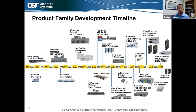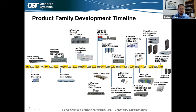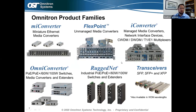Omnitron also supplies its own SFP, SFP+, or XFP transceivers for 10 gig speeds. Looking at our product development timeline, we started making AS400 products in the early 90s, and as Ethernet technology evolved so did our products. In 2010 we launched our first PoE media converter called the Omni Converter. We've been adding more PoE products since — including RuggedNet PoE switches and PoE extenders. Most recently we launched PoE switches supporting the 802.3bt standard for higher power PoE applications.